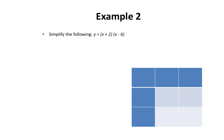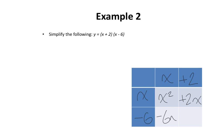In our second example, we want to simplify: y equals x plus 2 multiplied by x minus 3. You're going to take the first binomial and write it into the chart — x and positive 2. Then write x and negative 3. We're going to multiply these terms: x times x is x squared, x multiplied by positive 2 is positive 2x, and x multiplied by negative 3 is negative 3x.